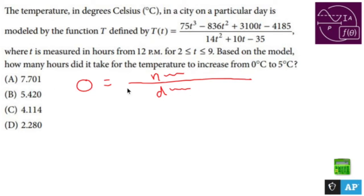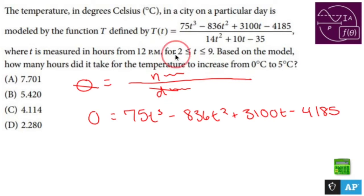Now when 0 equals that, the denominator doesn't matter because you multiply both sides by the denominator, you get 0 equals the numerator, which is going to be 75t cubed minus 836t squared. I'm just rewriting the top, which is kind of a waste of time. But this is what's going to happen. You are allowed to use a calculator here. When you type this into a calculator, maybe you type in y equals into a calculator.